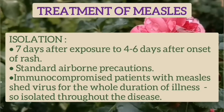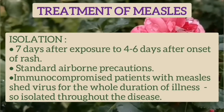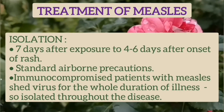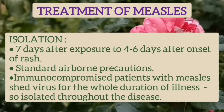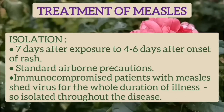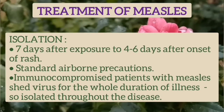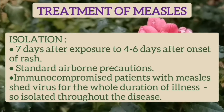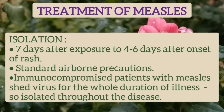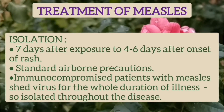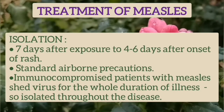Isolation is required in a measles case from 7 days after exposure to 4 to 6 days after the onset of rash. Standard airborne precautions should be maintained. Immunocompromised patients with measles usually shed virus for the whole duration of illness, so they should be isolated throughout the disease.